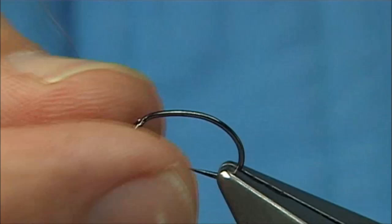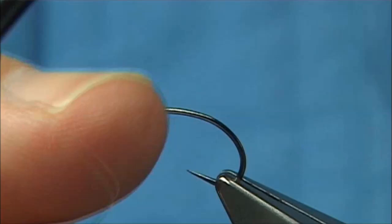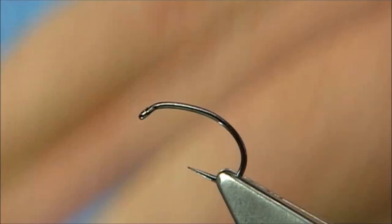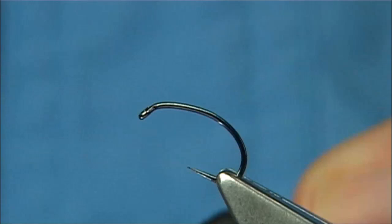Now the hook I am using, this is a size 12 barbless scud hook. Normally I would tie these in 14s, 12s, 10s. This is the middle of the road size for this style of fly anyway.